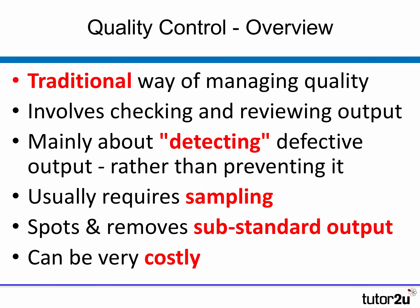Quality control is a very traditional and still popular way of trying to manage the level of product quality, and it involves the concept of inspecting — checking and looking at output as it goes through the production process. The main objective is to detect defective output rather than allowing it to reach the customer. Since it's not always possible to check all output, this normally requires some kind of sampling — taking a representative sample to see whether it meets the quality standards, and removing any substandard output.